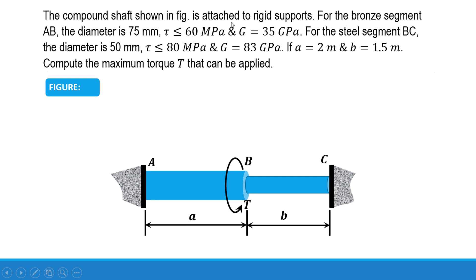The compound shaft is attached to rigid supports. For the bronze segment AB, the diameter is 75 mm, allowable shear stress is 60 MPa, and shear modulus G is 35 GPa. For the steel segment BC, the diameter is 50 mm, allowable shear stress is 80 MPa, and G is 83 GPa.